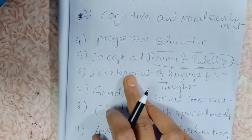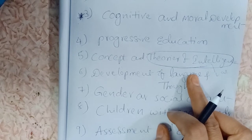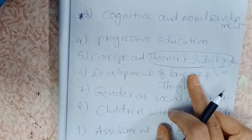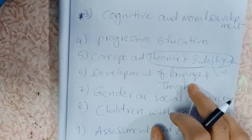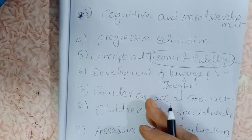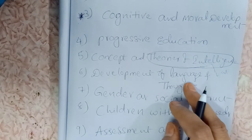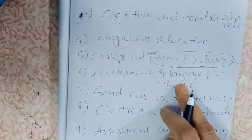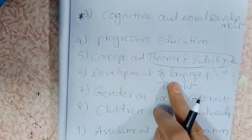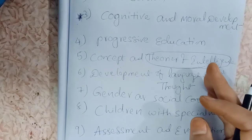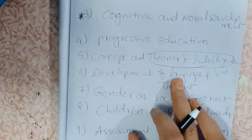The sixth topic is development of language and thought. Under this we have stage-wise development of language across early childhood, later childhood, and adolescence — including the pre-linguistic stage, one-word stage, and development of grammar. We also look at problems with Piaget's theory and consider alternative theories.